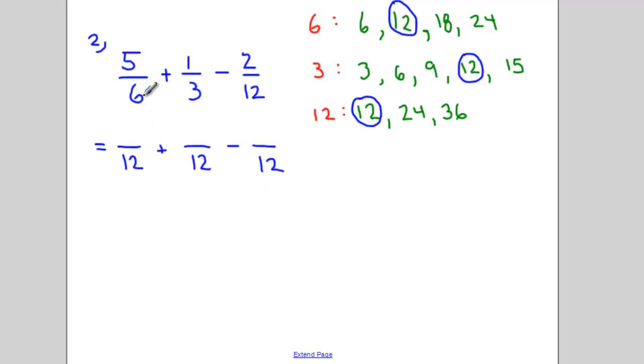Just like in the first example, what do I need to multiply 6 by to make it equal 12? I need to multiply it by 2, which means I also multiply the numerator by 2. So my first fraction becomes 10 over 12. My second fraction, I multiply 3 by 4 to make it equal 12, which means I multiply 1 by 4 as well. And then my last fraction, I don't need to do anything to it to make it have a denominator of 12, so it stays the same.